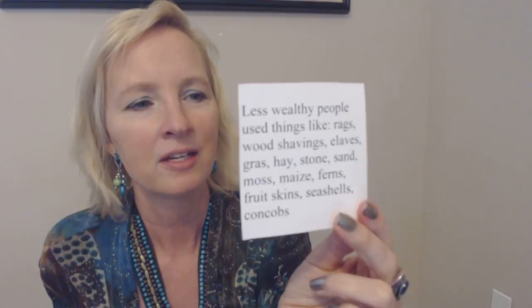Grass, hay, stone, sand, moss, maize, ferns, fruit skins, seashells, or corn cobs. So they could not afford wool and lace and hemp, so they would use things that might be more readily available, like leaves or grass or things like that.